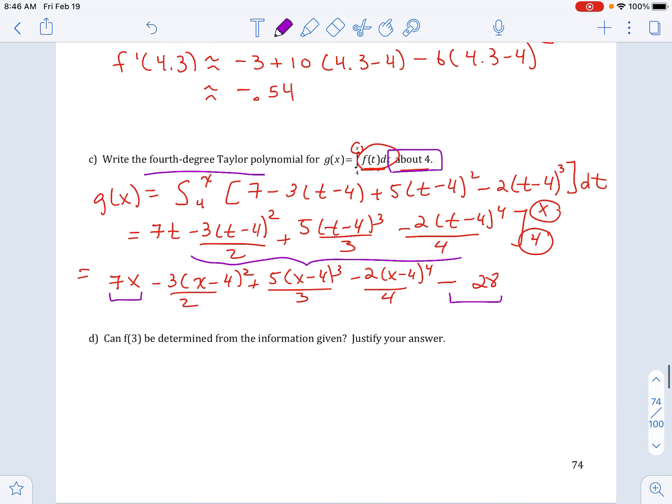Really, that can be rewritten like this. So group those together. And now I have a polynomial that is centered about x equals 4. So this is the fourth degree that they're looking for.